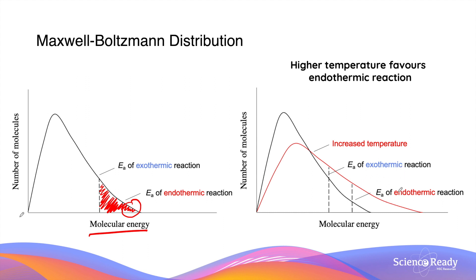By shifting the curve to the right, the area under the curve to the right of the activation energies becomes larger for both the exothermic and endothermic reactions — this is why the rates of reaction become faster. However, if you compare the proportion by which the area has increased, the endothermic reaction experiences a greater effect, as its activation energy is larger. What was originally a smaller proportion of the graph becomes much larger, making this increase more evident for the endothermic reaction. This is why changes in temperature affect the endothermic reaction more than the exothermic reaction.